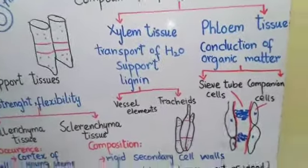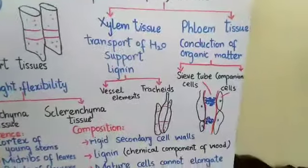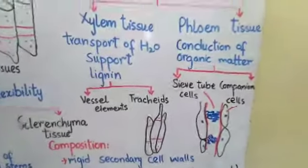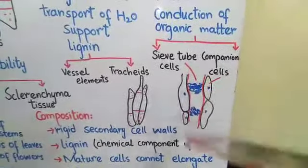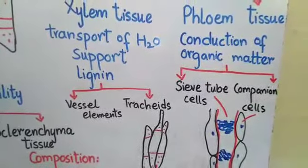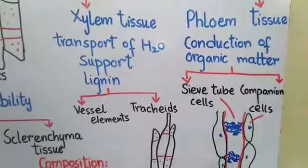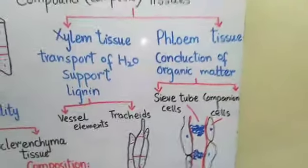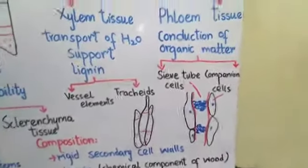Phloem tissue contains sieve tube cells and companion cells — two types of cells exist. Sieve tube cells are long cells, as you can see here. Their end walls have small pores, and pores are also present within them. Many sieve tube cells join together to form long sieve tubes.